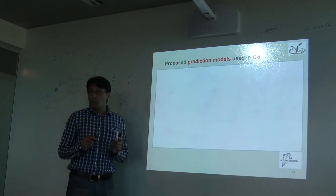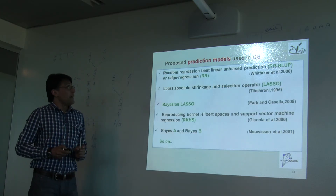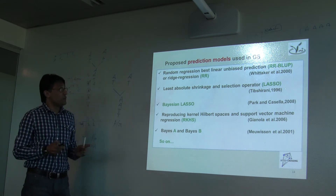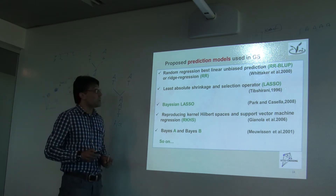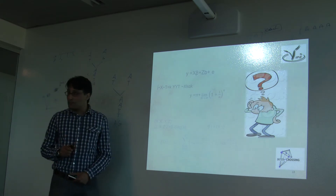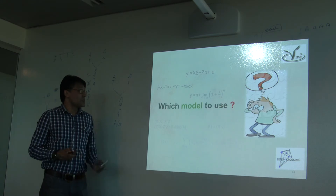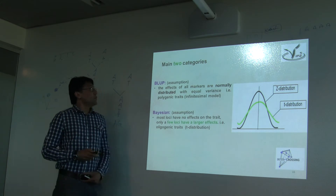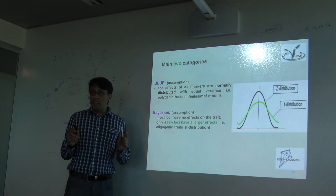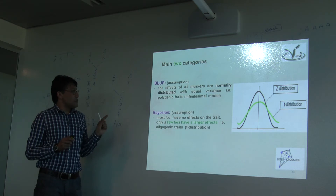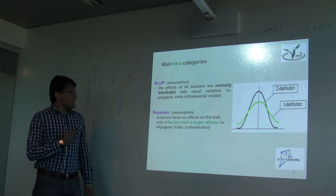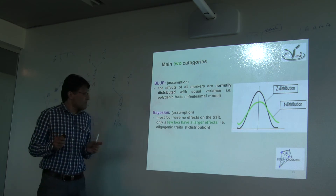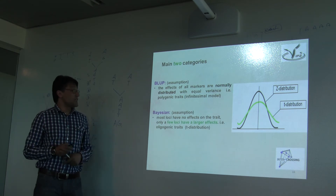Coming to the statistical models used in genomic selection: there are different models used in this area — RRBLUP, Lasso, Bayesian Lasso, RKHS, Bayes A, Bayes B, and so on. We can generally put these models into two categories based on their prior assumptions. For RRBLUP, the assumption is that the effects of all markers are normally distributed with equal variance, and it is used for polygenic traits. For Bayesian models, the assumption is that most loci have no effects at all, and only a subset of loci have larger effects — also used in the case of polygenic traits.